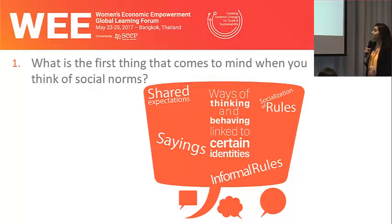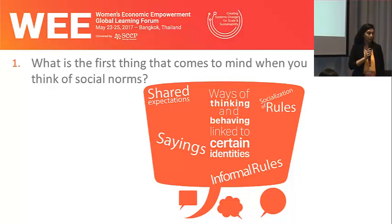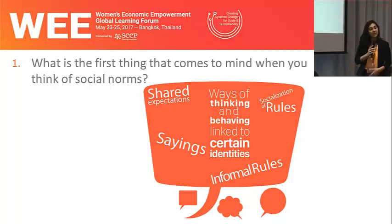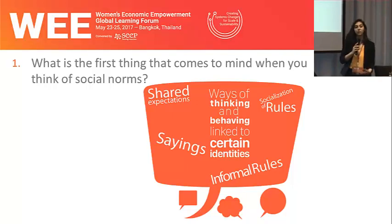What is the first thing that comes to mind when you think of social norms? When we posed this question in the Practitioner Learning Group, some of the following terms came up: shared expectations, sayings, ways of thinking and behaving into certain identities, informal rules, socialization of rules. And indeed there are different ways of understanding and defining social norms, reflected in the different approaches of academic disciplines which have contributed to the study of social norms and how it influences behavior.